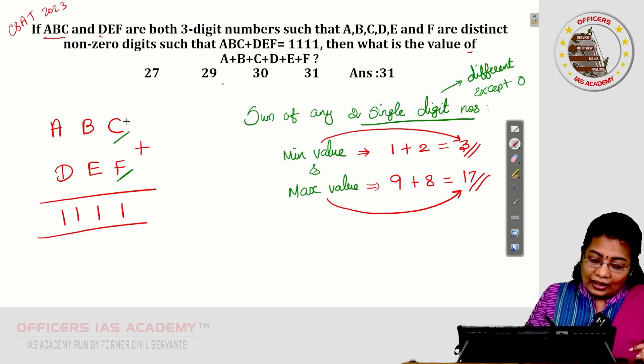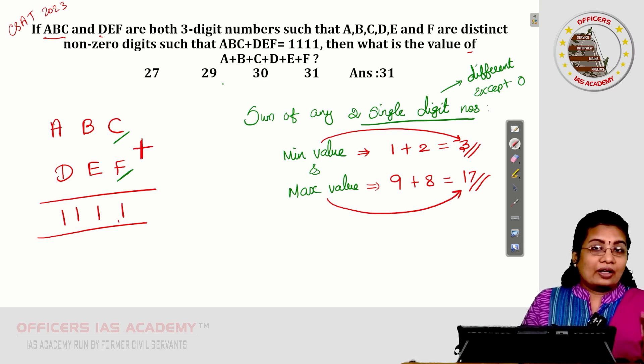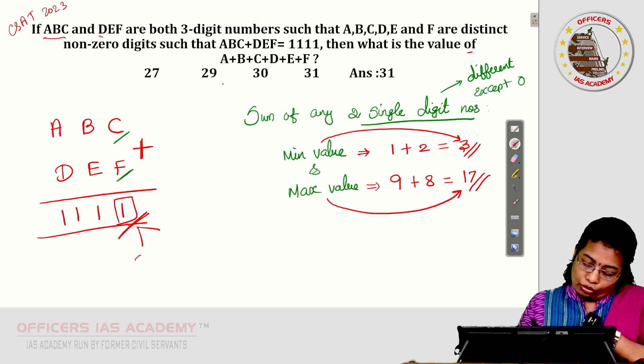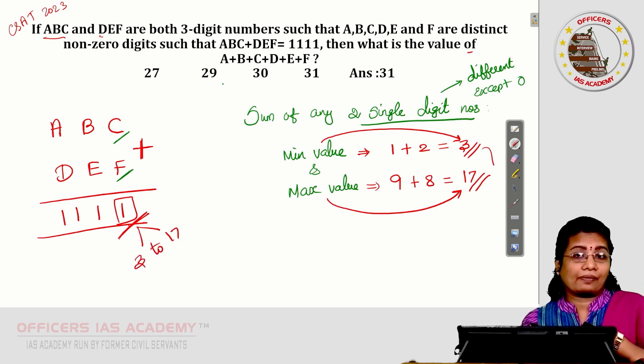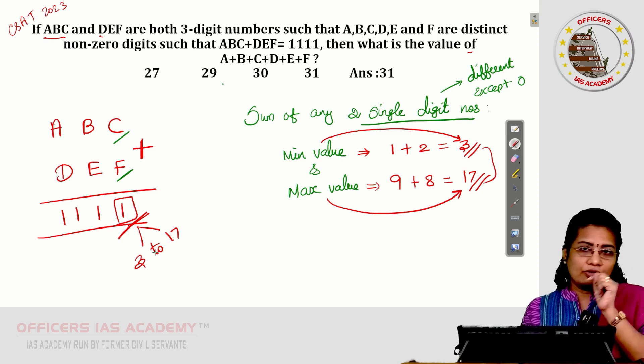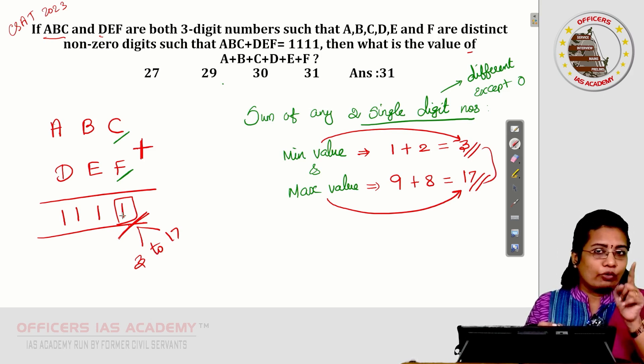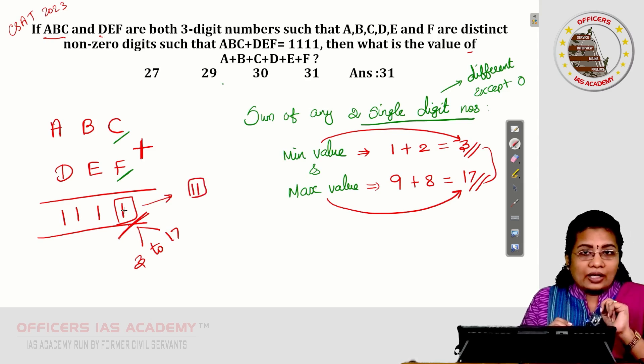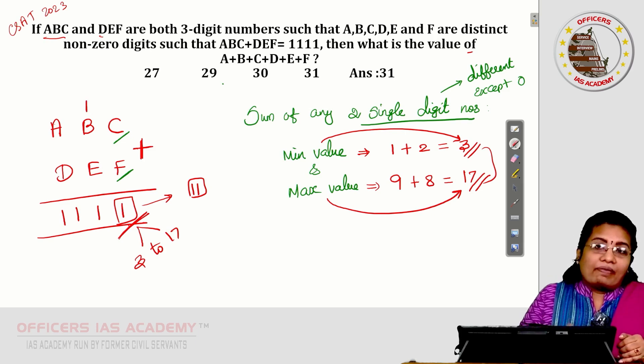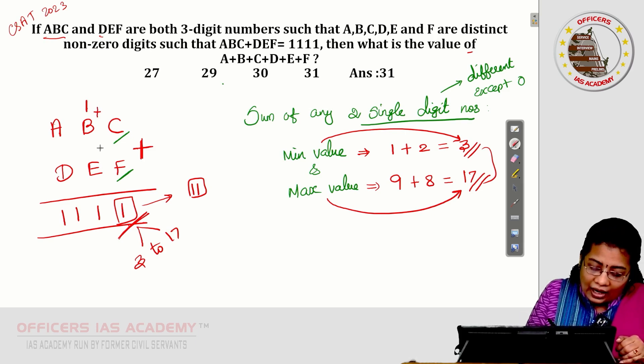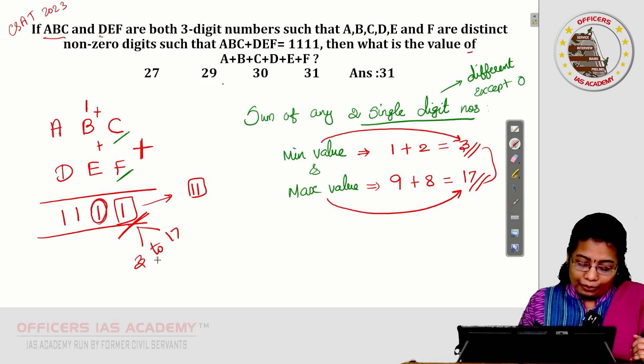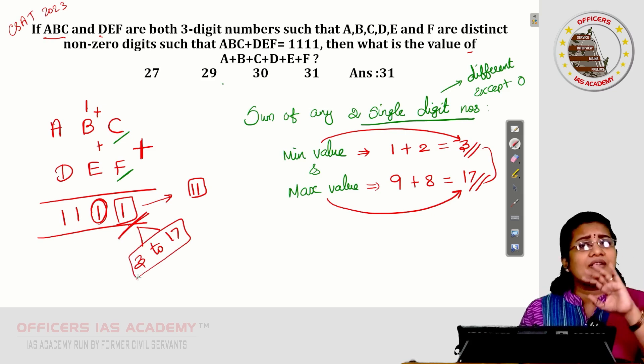So, here while addition symbol is given, this number given here 1. How to consider this number? Here any number given must be in the range of 3 to 17. Between 3 to 17 only, the numbers range. Here 1 is given means it is not actually 1. It has to be 11.